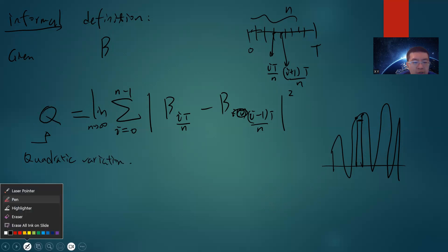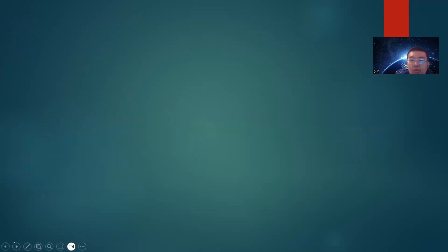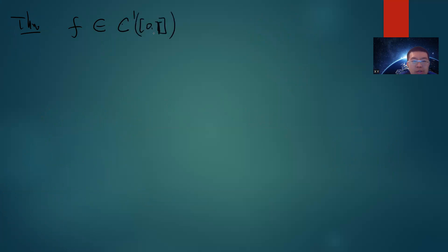What I'm going to say is that in Brownian motion, its quadratic variation is non-trivial — Q is non-zero. For a general smooth function, it should be zero. So here is a simple theorem: consider any function which is C1, meaning its derivative is also continuous, on [0, T]. Then Q of F equals zero.